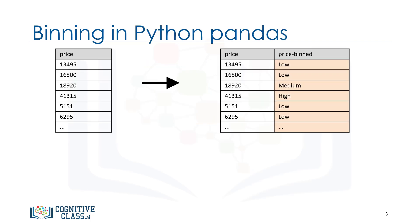In the actual car dataset, price is a numerical variable ranging from 5,188 to 45,400. It has 201 unique values. We can categorize them into three bins: low, medium, and high price cars.